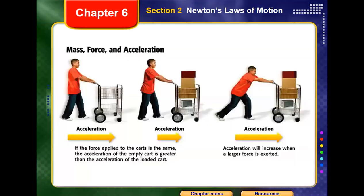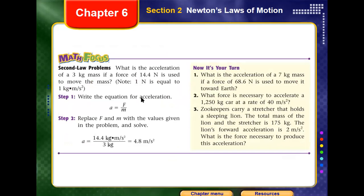Newton's second law describes the motion of an object when an unbalanced force acts on it. It depends on two factors: mass and force. As mass increases, acceleration decreases — they have an inverse relationship. The larger the mass, the harder to change acceleration. As force increases, acceleration increases — a direct relationship. For example, a person pushing an empty cart accelerates it easily, but the same force on a loaded cart produces less acceleration because mass increased. The same force on larger mass gives smaller acceleration. The formula is: acceleration equals force divided by mass.